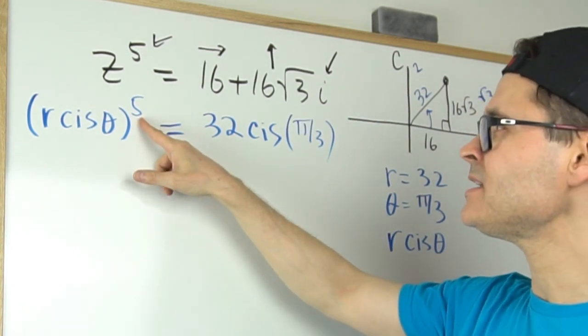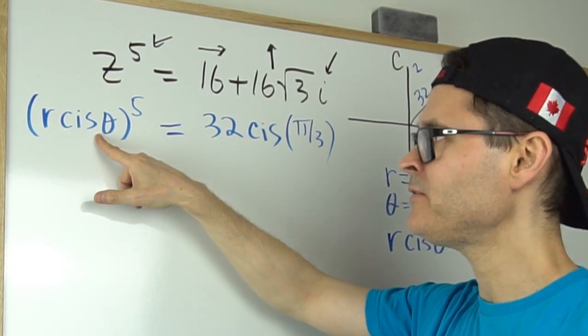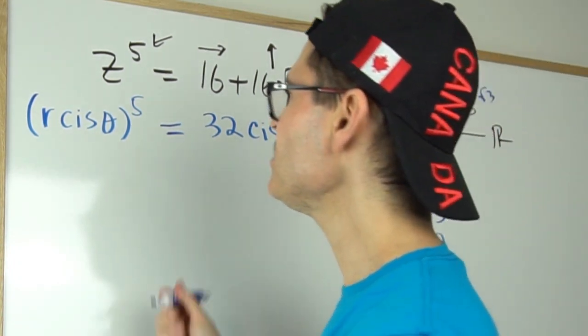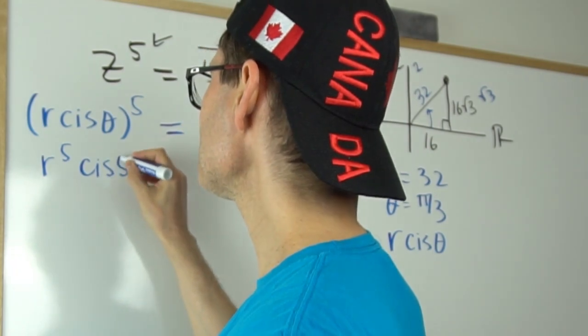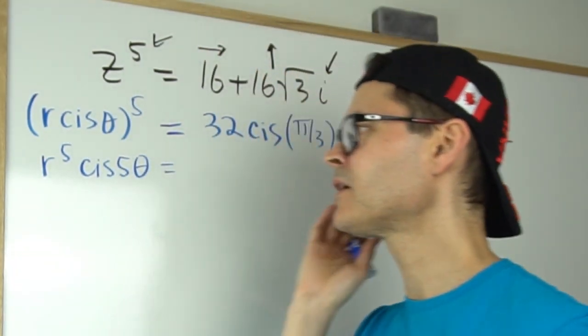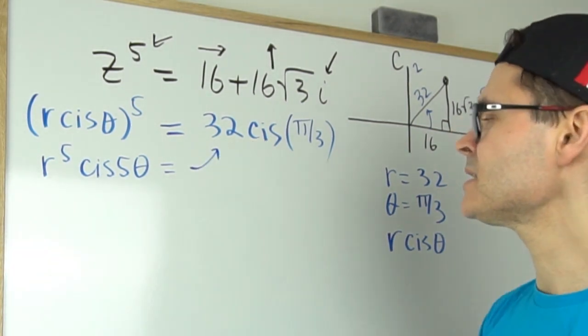And it tells us that we can take the power of 5 and write it as a coefficient here on θ. So that can be written equivalently as r to the 5 cis 5θ. And then that allows us to make some equations.